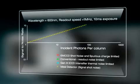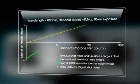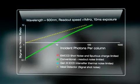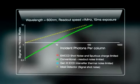When there is sufficient incoming signal to stay well clear of read noise floor, a high QE, deep cooled slow readout CCD delivers the highest signal to noise of all.